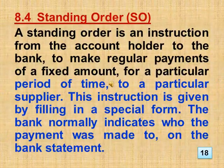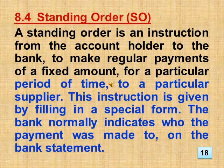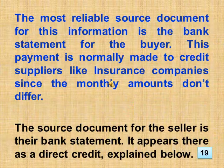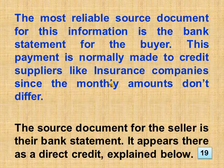Section 8.4: Standing Order. A standing order is an instruction from the account holder to the bank to make regular payments of a fixed amount, for a particular period of time, to a particular supplier. This instruction is given by filling in a special form. The bank normally indicates who the payment was made to on the bank statement. The most reliable source document for this information is the bank statement for the buyer. This payment is normally made to credit suppliers like insurance companies, since the monthly amounts don't differ. The source document for the seller is their bank statement, where it appears as a direct credit.